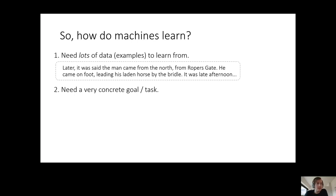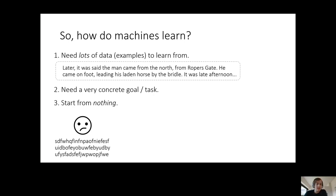Once you have that, another interesting property of all these programs is that they always start from nothing — from something completely random that doesn't do anything useful. In the case of books, you would start with a program that just spouts gibberish, like if a cat walked over a keyboard. It doesn't know anything — doesn't know English, doesn't know punctuation, doesn't know anything at all. This makes things easy because it's very easy to write such a program that just produces gibberish.